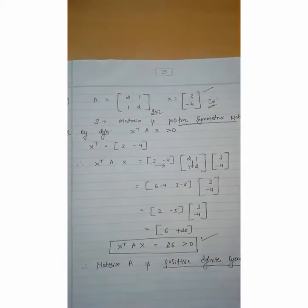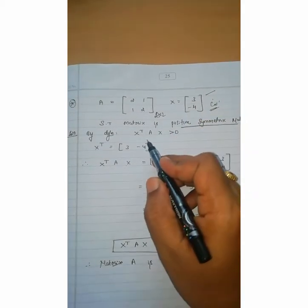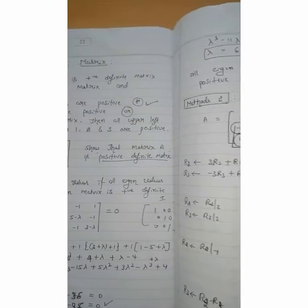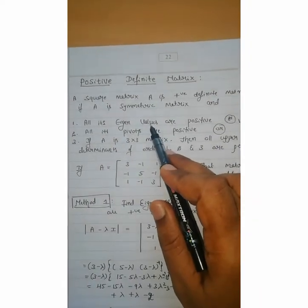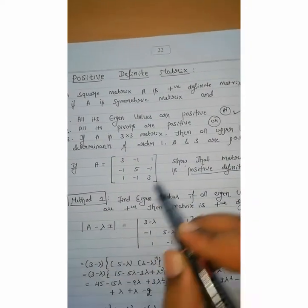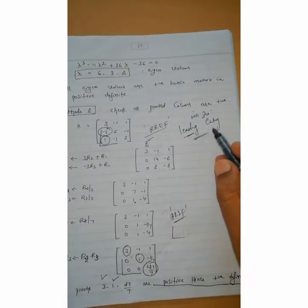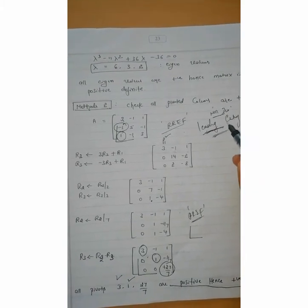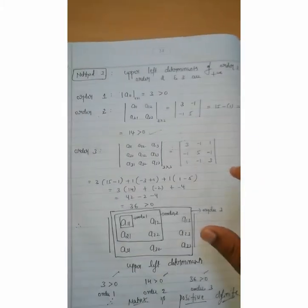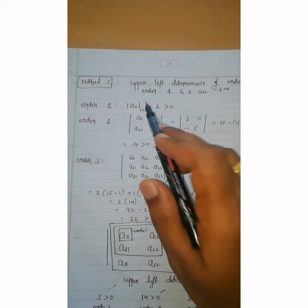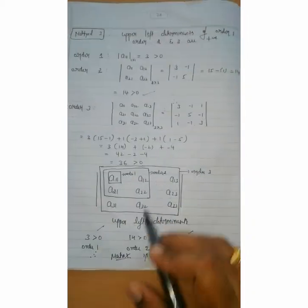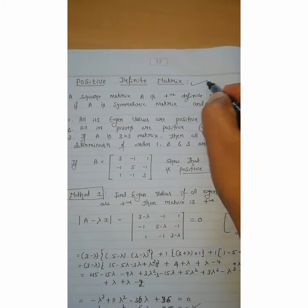This is another method of solving the problem. If X is given, use the formula X-transpose A X. If only A is given, then use one of the three methods: find the eigenvalues using the determinant equation set to zero, or find the pivoted entries ensuring all leading non-zero entries are positive, or check the upper left determinants of order 1, 2, 3 are greater than zero. Any one method holding true is sufficient to call it a positive definite matrix.